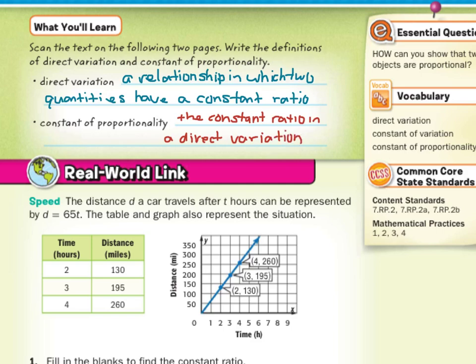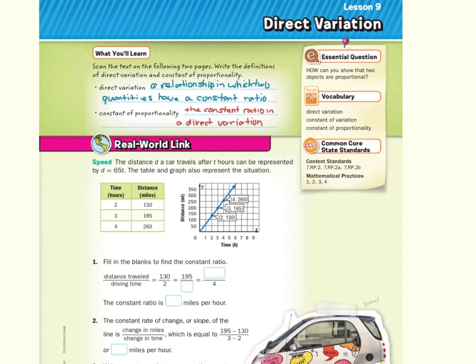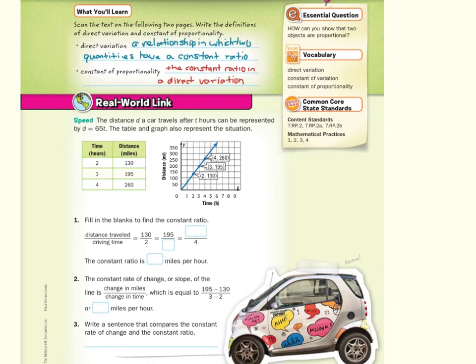Now for our real-world link. The distance d a car travels after t hours can be represented by d equals 65 times t. The table and the graph also represent the situation. Two hours, 130 miles. Think about it. 65 times 2 is 130. 65 times 3, 195. 65 times 4, 260. And you can see that on the graph as well.